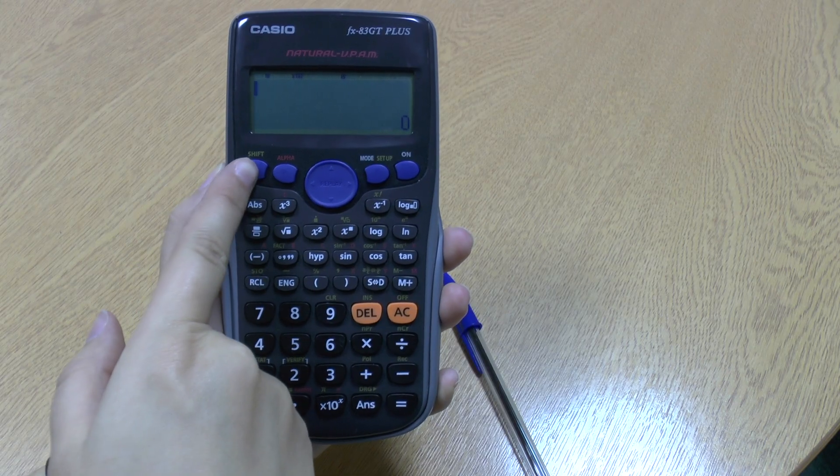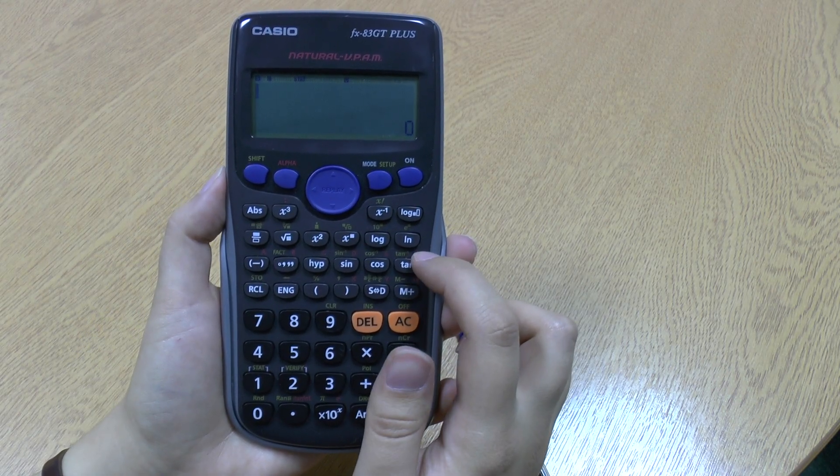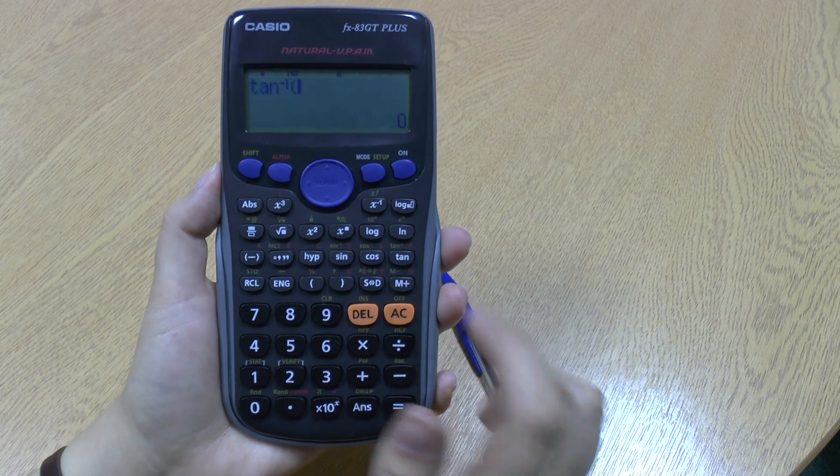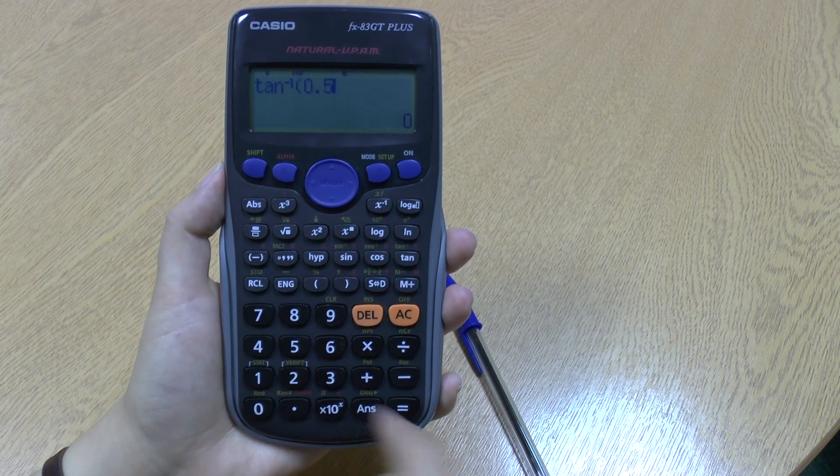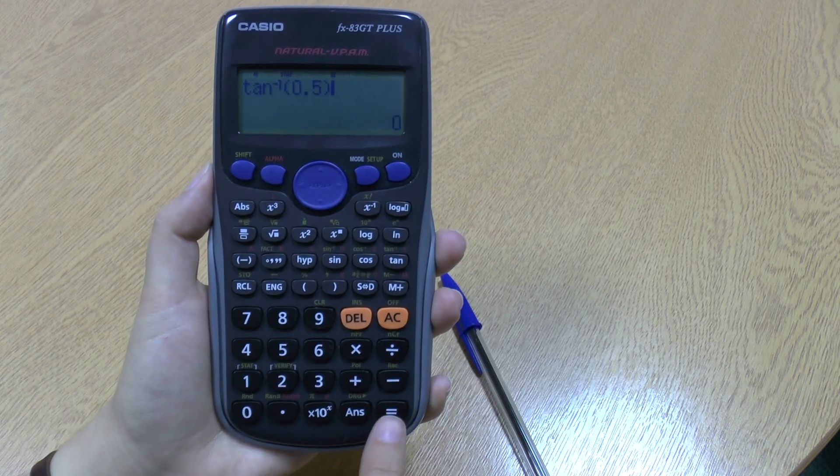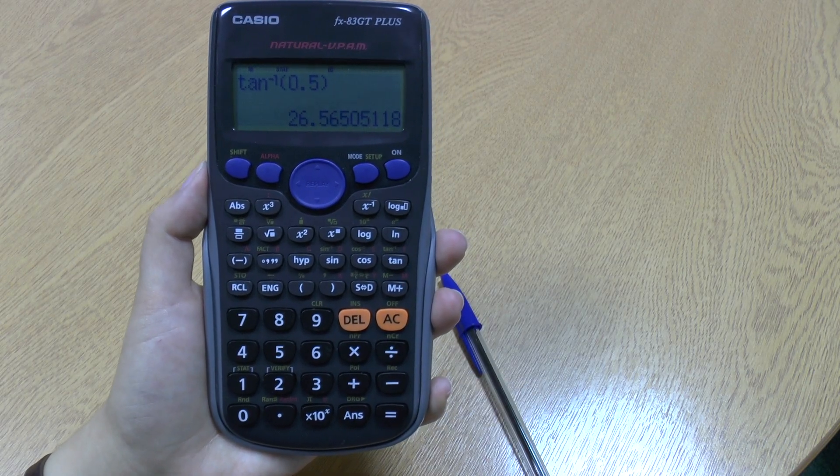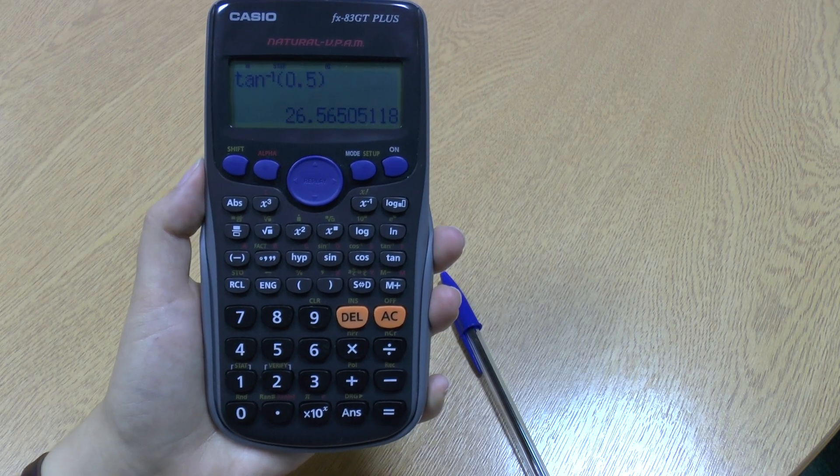So first we go to shift, then to tan, because it's got the tan minus 1 above. So tan minus 1, let's do 0.5 again. Close the bracket, press equals, and there we go. That is the tan for 0.5. Thank you very much.